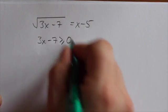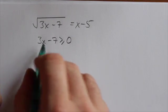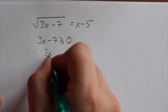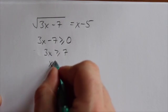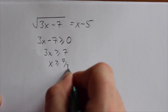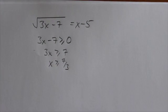Whatever that is must be positive, and then once I've got this expression, I can manipulate it to get x by itself. First by adding 7 to both sides, and then dividing by 3. So x has to be greater than 7 over 3.